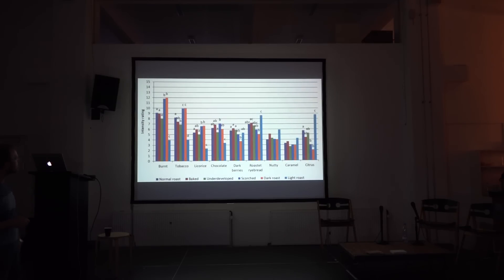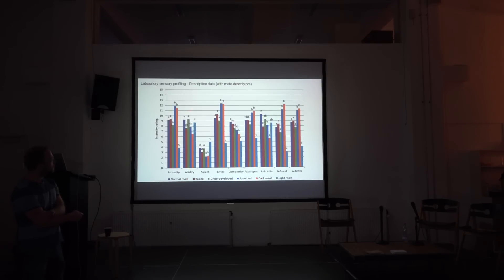One of the interesting things here is you can see complexity. It seems like the normal roast has got the highest complexity. And then it goes down where the light roast has got the lowest complexity. The only descriptors that didn't turn out to behave different was nutty and caramel. But it's really good that you've got really statistically significant differences on the descriptors when it comes to the different roasting defects.